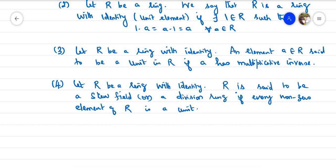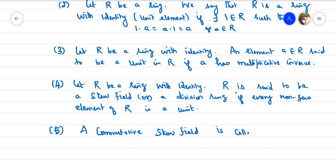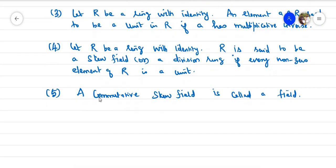The last definition is field. A commutative skew field is called a field. So if a skew field also satisfies the commutativity property for multiplication, then it is a field.